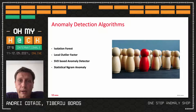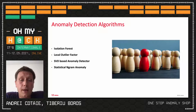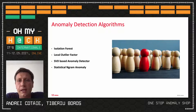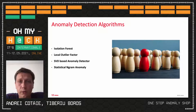OSAS provides out-of-the-box support for four anomaly detection algorithms: isolation forest, local outlier factor, statistical SVD-based anomaly detection, and statistical n-gram anomaly detection. The first three are part of scikit-learn. The last one, statistical n-gram anomaly, was built especially for OSAS. It computes all possible combinations of two and three tags, computes the probability of observing those tags together, and from that computes a negative log likelihood. For new examples, it builds all possible tag combinations and sums over the negative log likelihood, which becomes a rarity score for that observation.